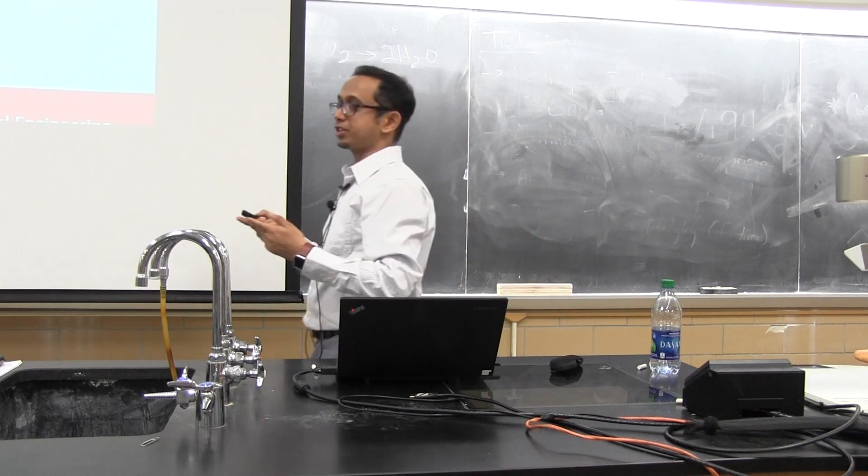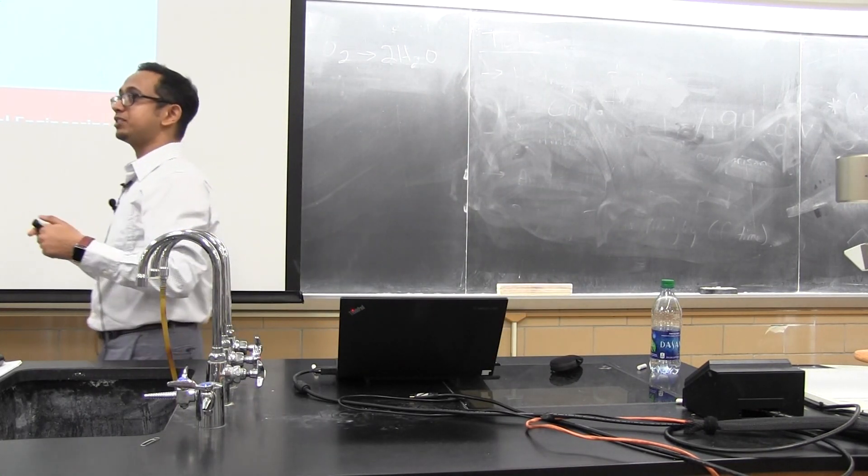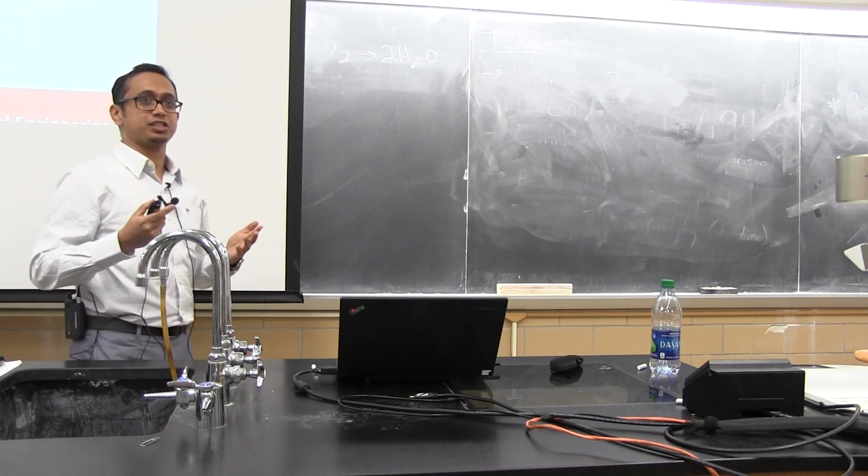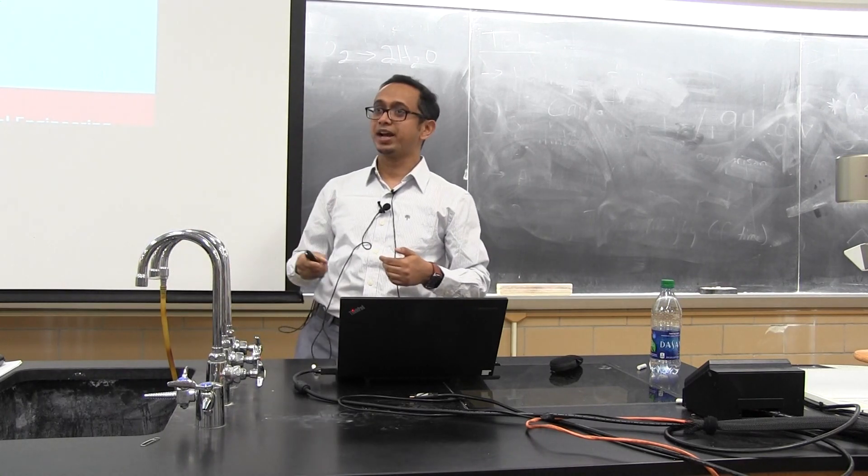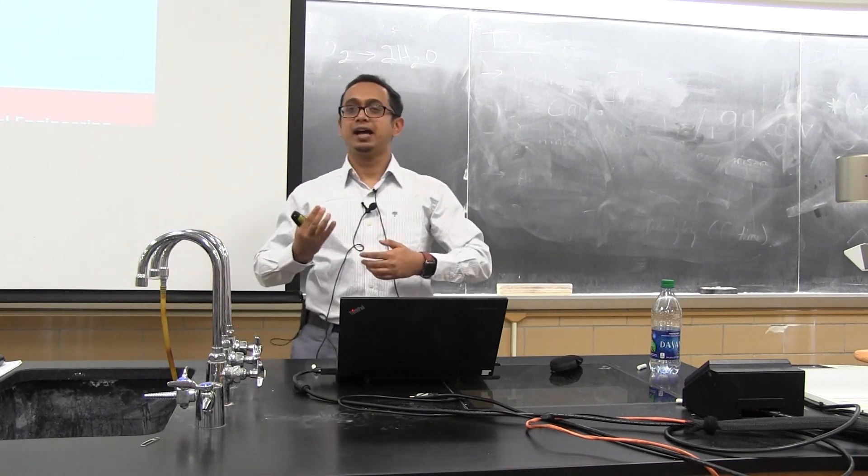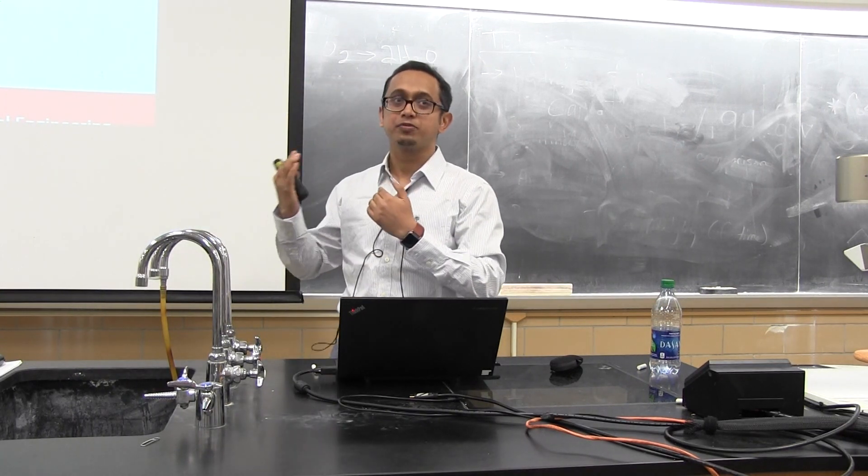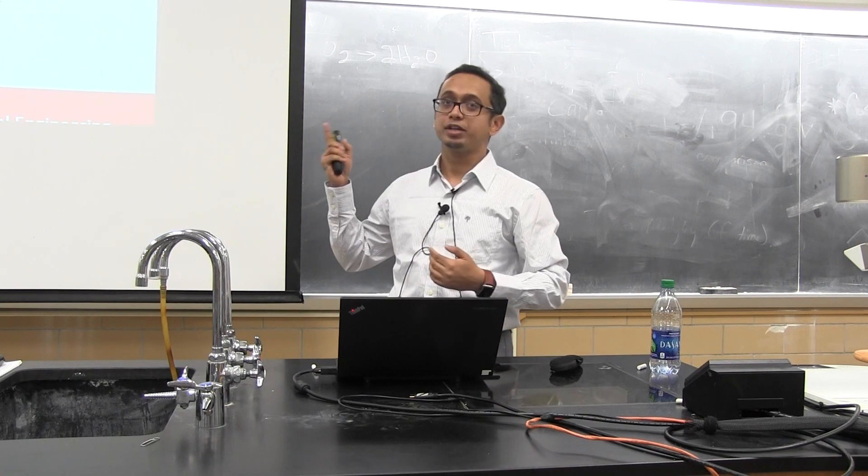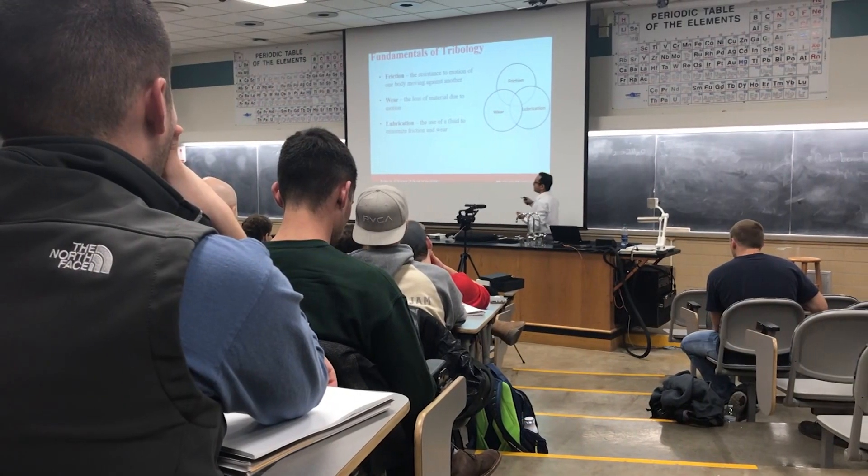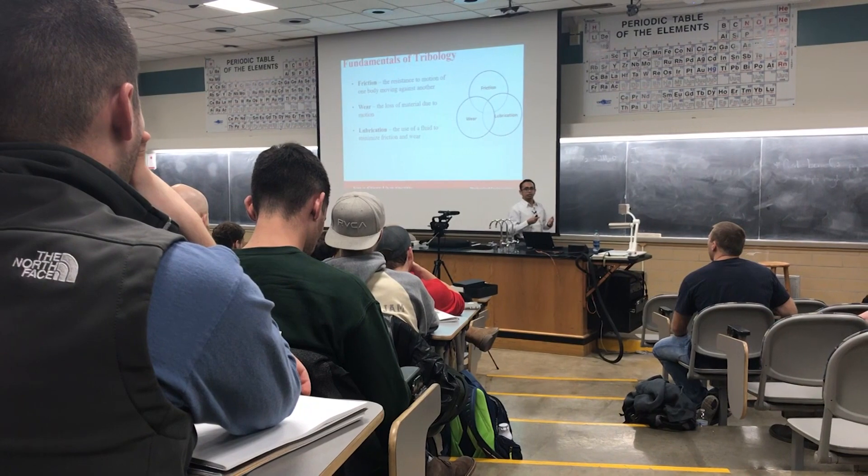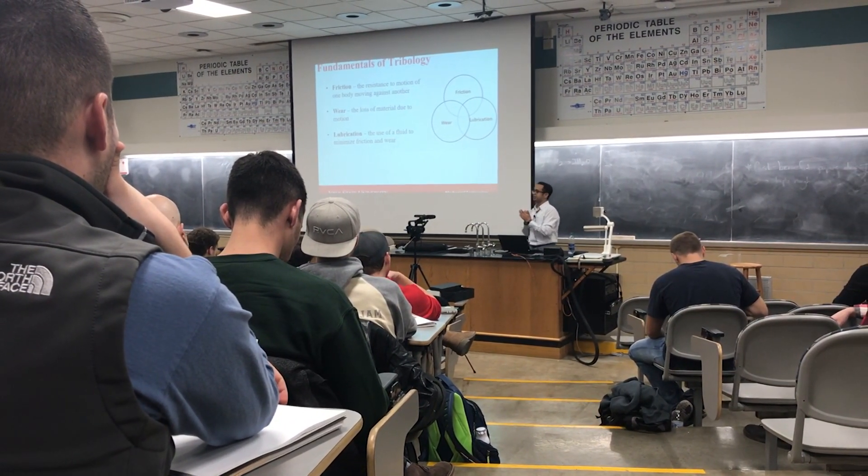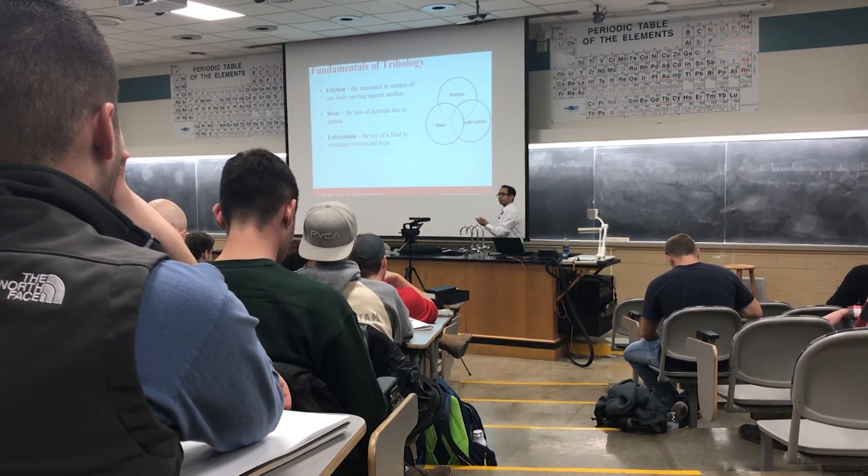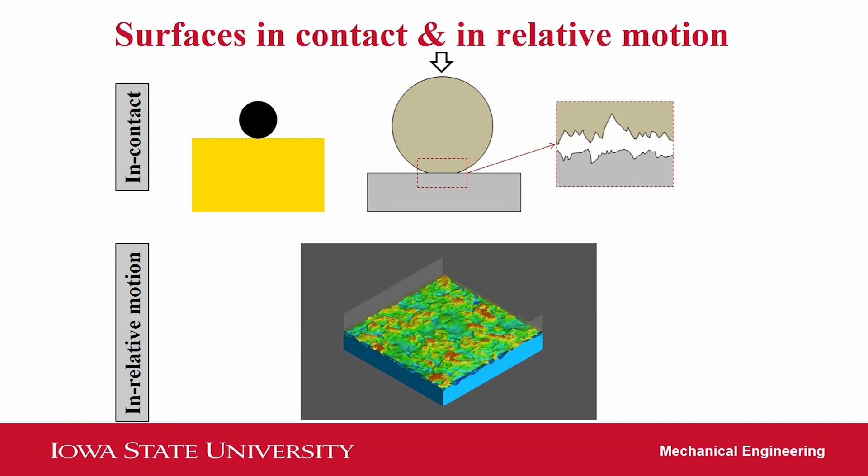If we think about friction, in some cases you need more friction, in some cases you need less friction. Think about racing cars. When you hit the brake, there should be more friction between the wheel and the road, so the car needs to stop pretty quickly. Why do you need less friction? Engine components. There are different components rubbing against each other. If you have too much friction, then the component will fail pretty quickly. These are the areas where tribologists pay their attention.